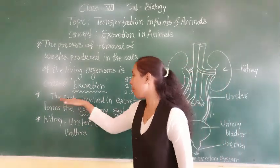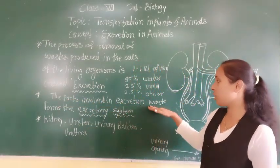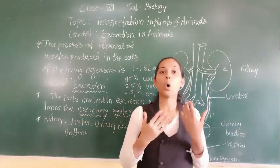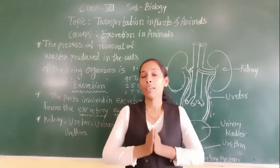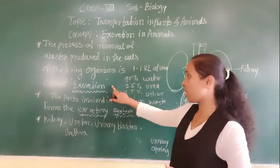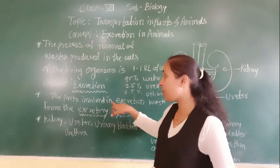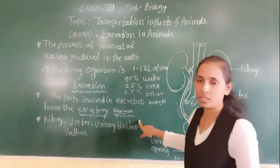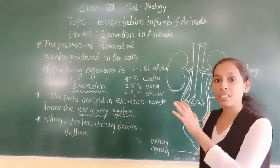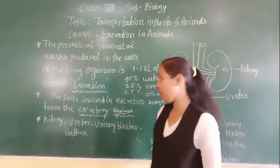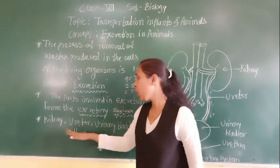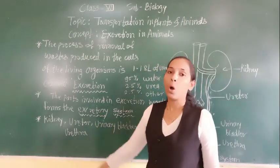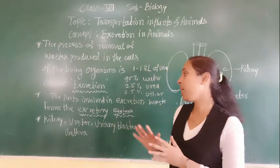The parts involved in the excretion process form the excretory system. The organs which take part in the process of excretion form one system called the excretory system. The excretion organs are kidney, ureter, urinary bladder, and urethra.